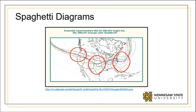Spaghetti diagrams can be useful in describing the flow of people, information, or material. They are not as detailed or informative as value stream maps, but they can be useful in seeing the sequence and interaction as well as the likely future path.